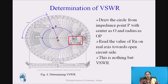For Method 1 determination of VSWR, draw a circle from impedance point P with center O and radius OP. This is a constant VSWR circle. Read the value of Rn on the real axis towards the open circuit side — that value is the VSWR. The open circuit side and short circuit side are on opposite ends of the real axis. The Rn value read on the open circuit side is the VSWR value.